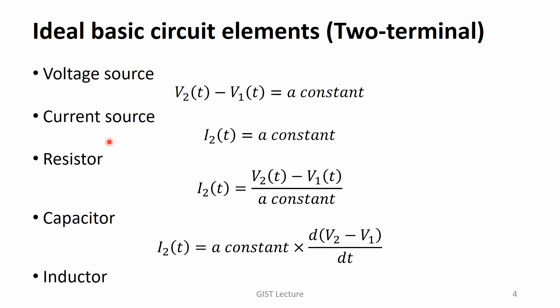We have five ideal basic circuit elements: a voltage source, a current source, a resistor, a capacitor, and an inductor. For each of them, we have a relation between the terminal voltages and the terminal currents. For example, a constant voltage difference is assigned between two terminals of a voltage source. In the case of a resistor, the current is given by Ohm's law.